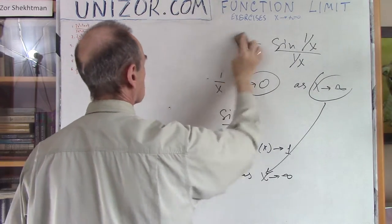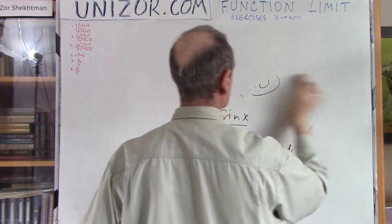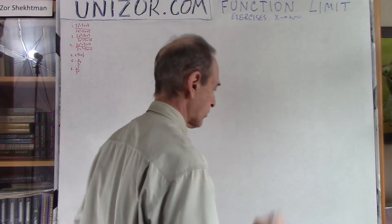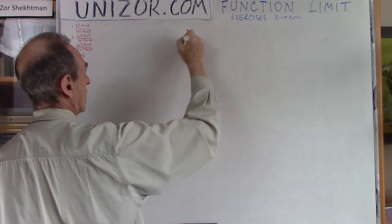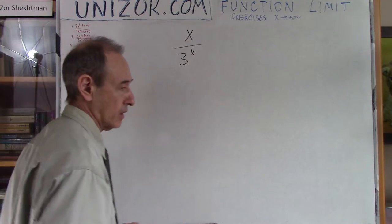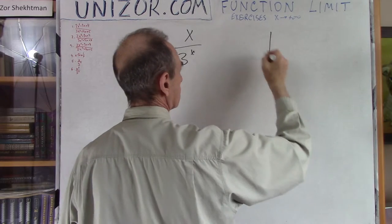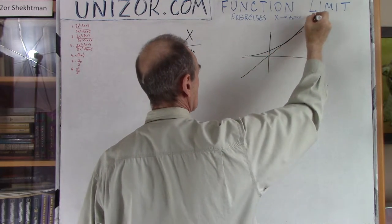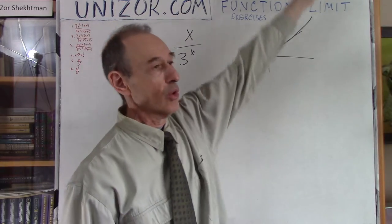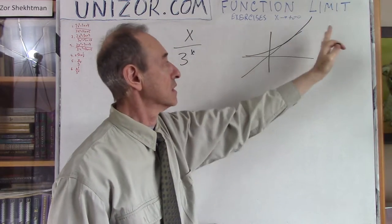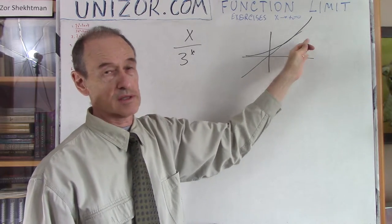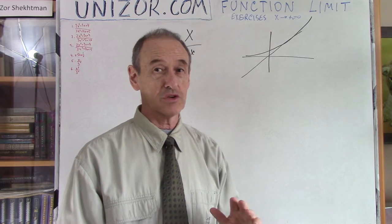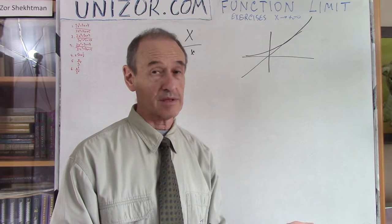The last couple of examples might be a little more interesting because they require a certain trick. Consider x divided by 3^x. I'm pretty sure everybody feels that 3^x grows significantly faster than x — x grows linearly while 3^x grows exponentially. We all know that an exponential function eventually grows faster than any linear function, even if the linear function is very steep.